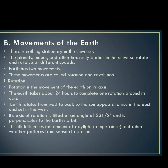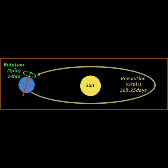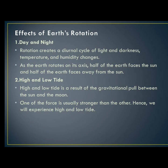The effects of the earth's rotation: the first one is the rotation of day and night. Rotation creates a diurnal cycle of light, darkness, temperature, and humidity changes. As the earth rotates on its axis, half of the earth faces the sun and half is far away from the sun.